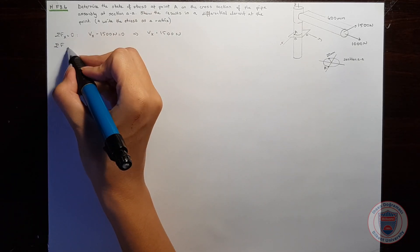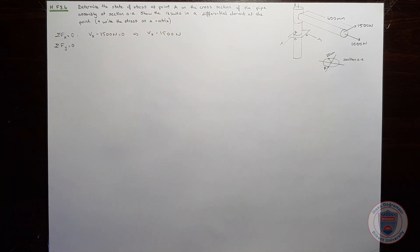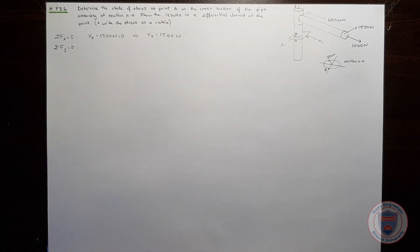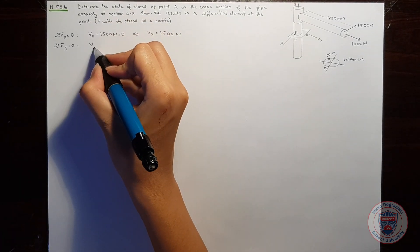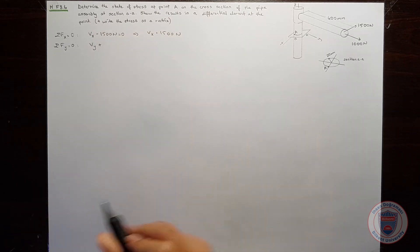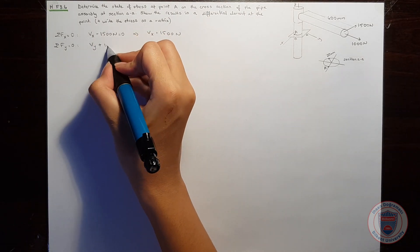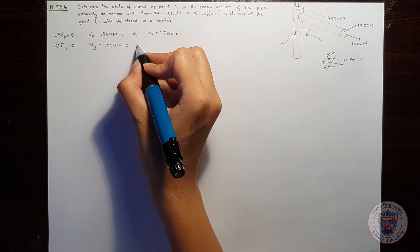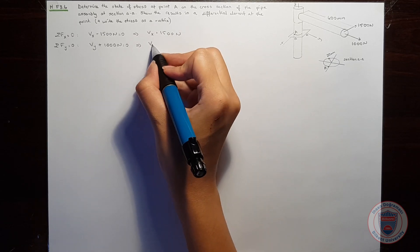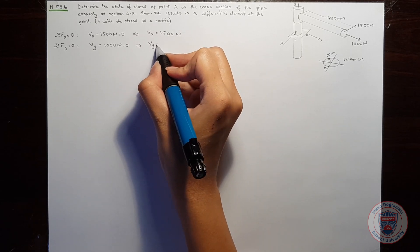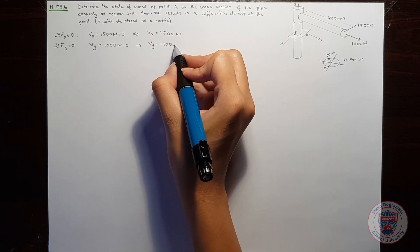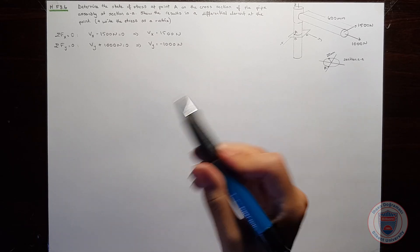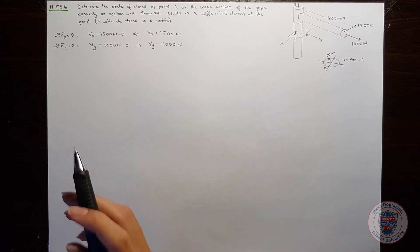In the y direction, the sum of the forces will also be zero. We have a shear plus 1000 newtons, so that Vy will be equal to minus 1000 newtons. We don't have a force in the z direction, so we will move to the moments.